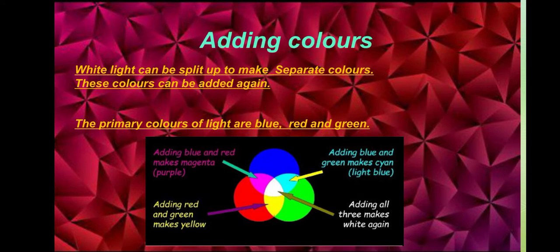Adding Colors. White light can be split up to make separate colors, and these colors can be added again. The primary colors of light are blue, red and green. Adding blue and red makes magenta, which is purple. Adding red and green makes yellow. Adding blue and green makes cyan, a light blue color. Adding all three — blue, red and green — makes white again.